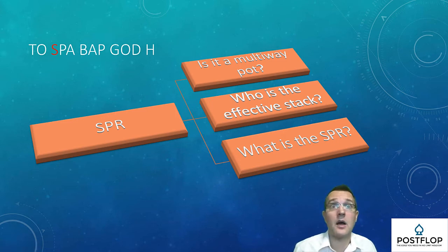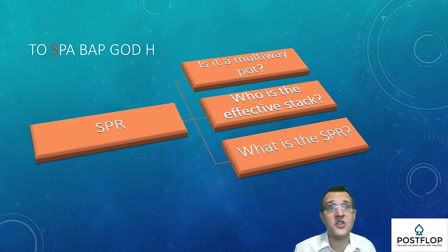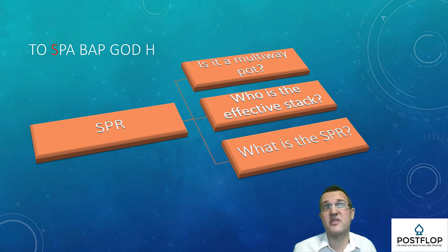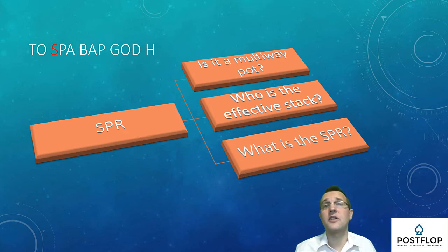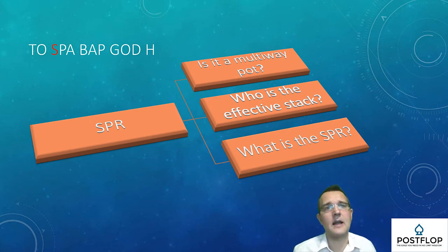S now stands for SPR, no longer stack sizes. As with stack sizes in the preflop videos, SPR can be placed at any point during the narrow window before the cards are dealt — you can shuffle the order if you wish. Although SPR is traditionally a flop-only measurement, you can calculate it across the turn and river as well. Over time this will improve your understanding of pot geometry and how committed you should be to certain situations. The three questions I ask are: is it a multi-way pot, who is the effective stack, and what's the SPR? I'll talk more about calculating SPR in the next video.